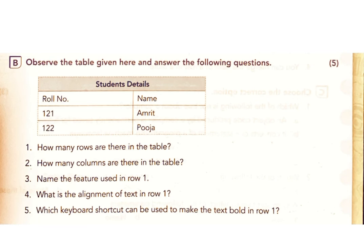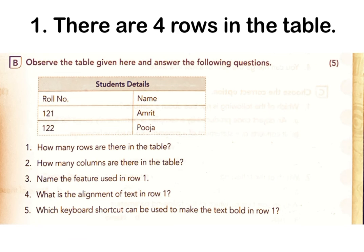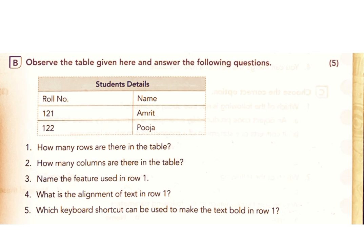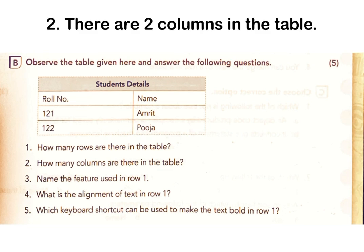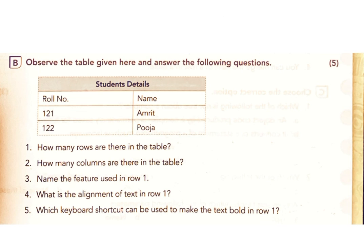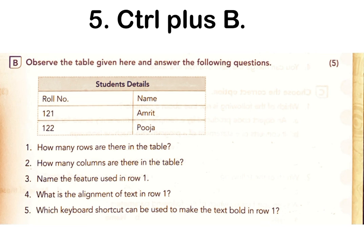B: Observe the table given here and answer the following questions. The table shows Student Details with entries: X/21 Amrit, X/22 Puja. 1) How many rows are there in the table? Answer: There are four rows. 2) How many columns are there in the table? Answer: There are two columns. 3) Name the feature used in row one. Answer: Merge Cells. 4) What is the alignment of text in row one? Answer: Left. 5) Which keyboard shortcut can be used to make the text bold in row one? Answer: Ctrl + B.